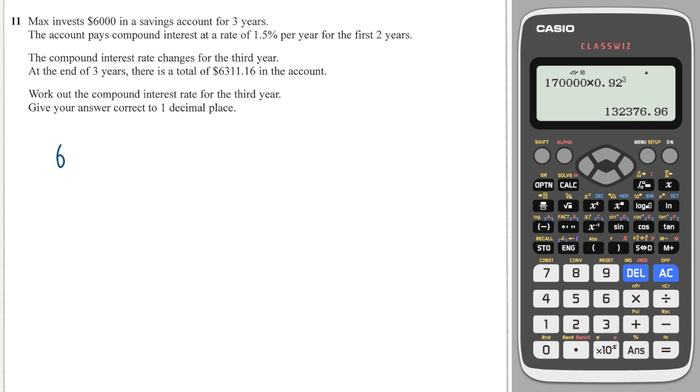I'll start off by working out how much he has after two years. The rate is 1.5%, so that's 1.015 as a multiplier, and that's to the power of 2 because that's for two years.